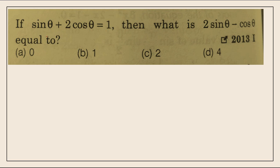Next question. On the second question: if sinθ plus 2cosθ equals 1, then what is 2sinθ minus cosθ equal to? We are given the value of sinθ plus 2cosθ, and we have to find 2sinθ minus cosθ. We will start by squaring both sides.